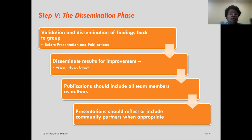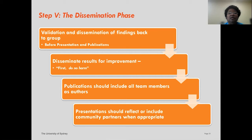As you reach the dissemination phase, validate findings by going back to the group before any presentations or publications, because you are representing that community. Disseminate results that will empower or build capacity. As we learn in ethics — do no harm. Don't allow your research or findings to be harmful to the community. Publications should include all team members as authors, and presentations should reflect and include community partners where appropriate.